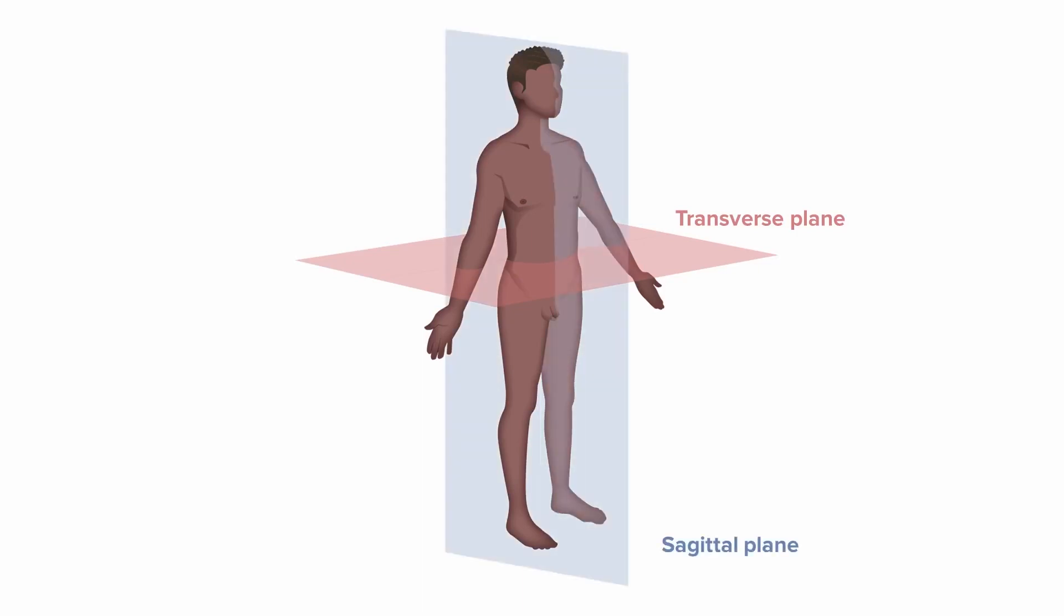We also have sagittal planes. A sagittal plane will be a plane that divides the body into right and left halves. And then finally, a coronal plane, and a coronal plane is a plane that will divide the body into front and back.